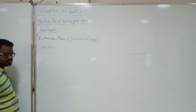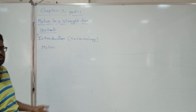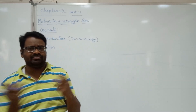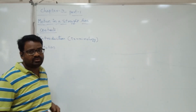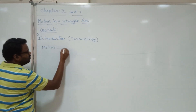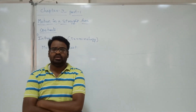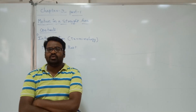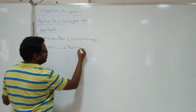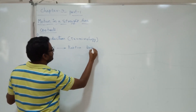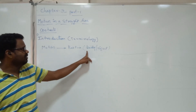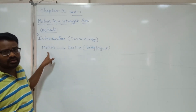Since we are talking about motion, the first term to understand is the concept of a body or object. Anything in the universe is a physical object — I am a physical object, a bus is a physical object, a planet is a physical object. The object under study is called a physical body. A body can either be in motion or at rest. The term for when a body is not moving is 'rest'.